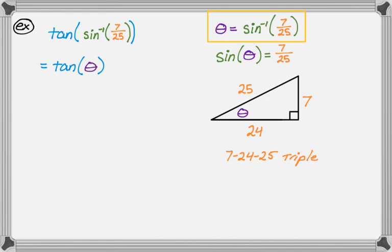I definitely recommend that you know the Pythagorean triples, or at least a bunch of them. So there's 3-4-5, 5-12-13, 7-24-25, 8-15-17. Those are all good to know.